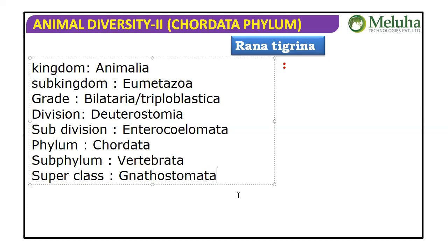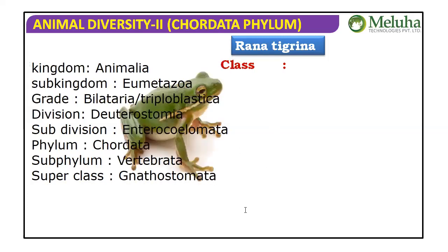The complete hierarchy so far is: Kingdom Animalia, Sub Kingdom Eumetazoa, Grade Bilateria or Triploblastica, Division Deuterostomia, Subdivision Enterocoelomata, Phylum Chordata, Subphylum Vertebrata, and Superclass Gnathostomata.